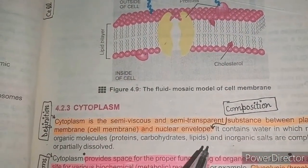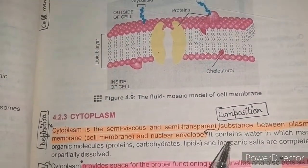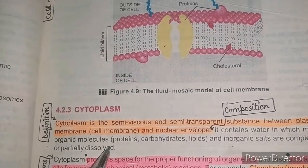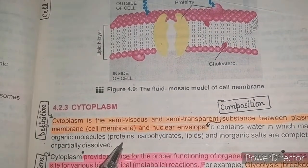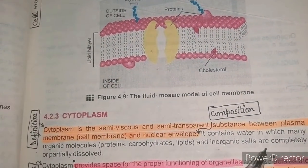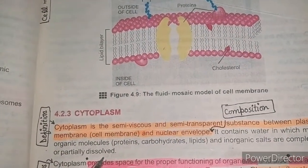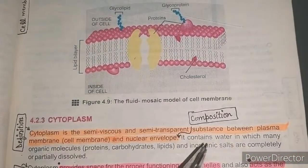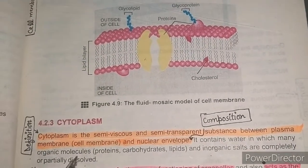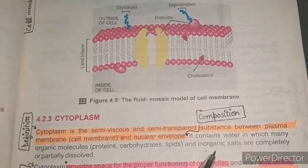The cytoplasm is found between the nuclear envelope and the plasma membrane. In terms of composition, it contains water in which many organic molecules like proteins, carbohydrates, lipids, and inorganic salts are completely or partially dissolved. So cytoplasm is essentially a watery material containing organic molecules and inorganic salts.